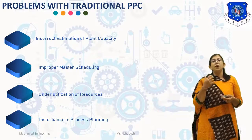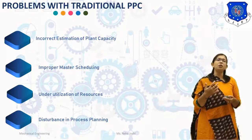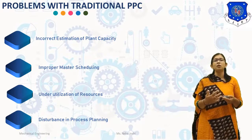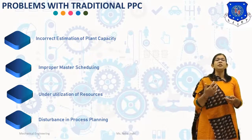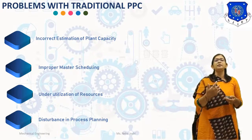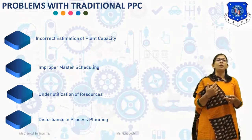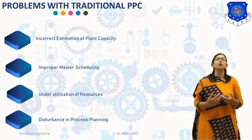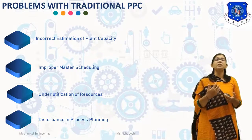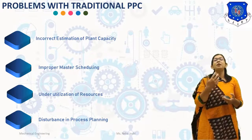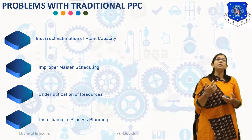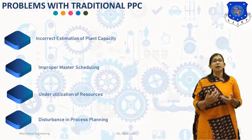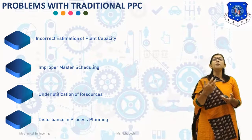The second problem is Improper Master Schedule. Non-availability of updated data centrally may lead to mistakes in Master Scheduling. Errors in Master Scheduling result in producing products with lower priority first while higher-priority products are kept waiting, which may disturb the delivery schedule and lead to customer complaints. The third problem is Underutilization of Resources. Due to improper Master Scheduling, plant management may implement sudden and frequent product changeovers, leading to excessive setup time which disturbs the flow of production.